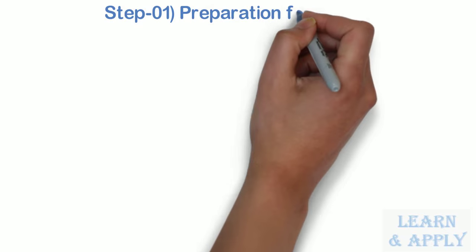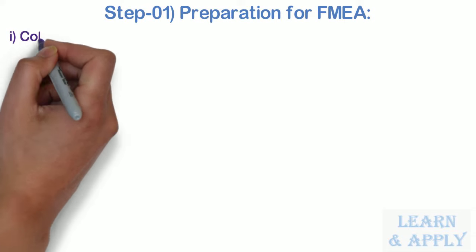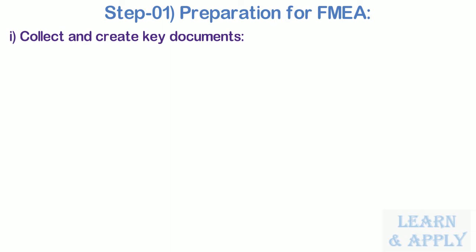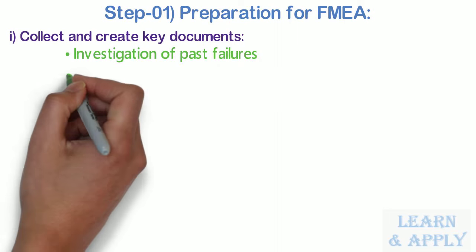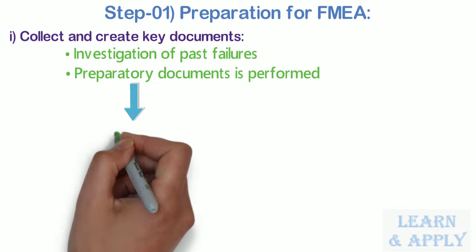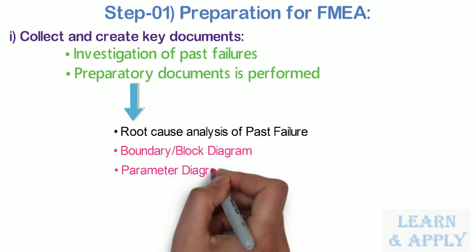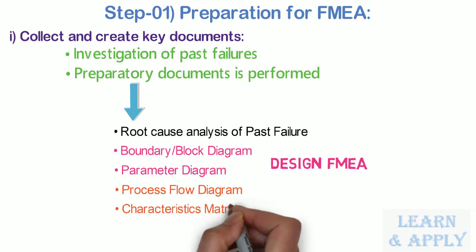Step 1: Preparation for FMEA. Basically, there are 3 sub-steps to confirm that we are ready to conduct an FMEA exercise. Sub-step 1: Collect and create key documents. FMEA works smoothly through the development phases when an investigation of past failures and preparatory documents is performed from the start. Preparatory documents may include root cause analysis of past failures, block diagram and parameter diagram for design FMEA, and process flow diagram and characteristics matrix for process FMEA.